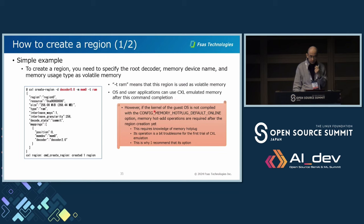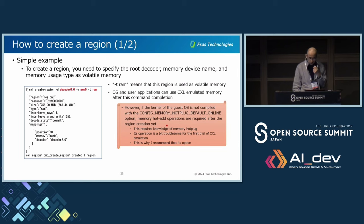However, if the kernel of the guest OS is not compiled with CONFIG_MEMORY_HOTPLUG and CONFIG_MEMORY_HOTPLUG_DEFAULT_ONLINE, memory hot plug operations are required after region creation. This requires knowledge of memory hot plug and is a bit troublesome for a first trial of CXL emulation — this is why I recommend enabling that option.